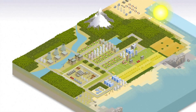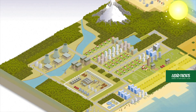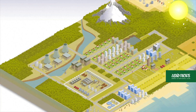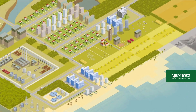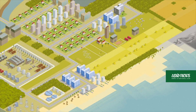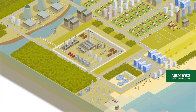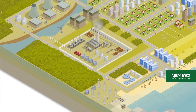A drought occurs when the soil and environment get no or very little water. It can reduce or destroy crop production and affect animals by reducing their feed or by destroying their natural habitat. Droughts can also disrupt water-intensive industrial activities.